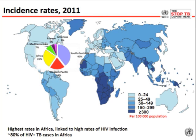The highest rates overall are in Africa and are linked with HIV infection, while the majority of cases — about 60% — are in Asia. Southeast Asia, which includes India and Indonesia, accounts for 40%, and the Western Pacific region, which includes China and the Philippines, accounts for another 19%. Africa represents about a quarter of all cases in the world.